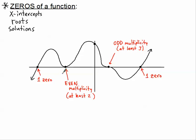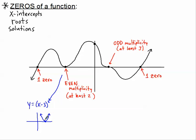Let's explore even multiplicity again with a familiar function. If we graph y = (x − 3)², that's a parabola shifted three units to the right. We know there are two roots — two zeros, two x-intercepts — and the graph is tangent to the x-axis at x = 3. That confirms even multiplicity. Similarly, y = x³ is an odd degree, and its graph wiggles right through the x-axis at the origin, illustrating odd multiplicity.